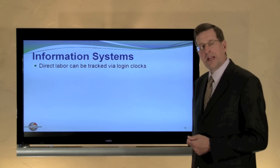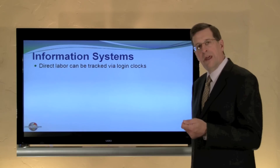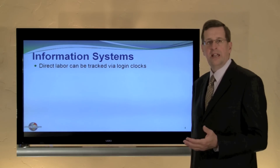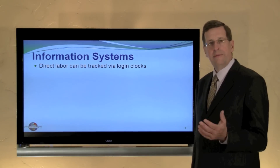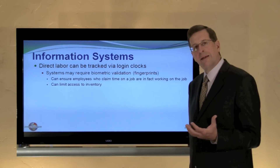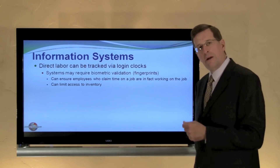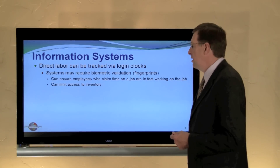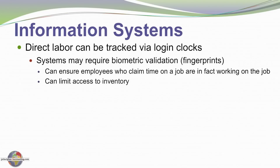In a similar fashion, direct labor costs can be tracked electronically. You're probably familiar with a time clock — you may have seen one where you work, or perhaps in an old movie where people are lined up clocking into work. Those time clocks were used to track time and prepare payroll, but also to assign time to particular jobs. Modern technology has moved beyond that with biometric controls such as fingerprint scans. That can also be attributable on a job-by-job basis, so we'll know how much time was actually worked on a particular job and who had access to the inventory used in that job.